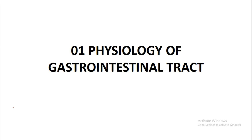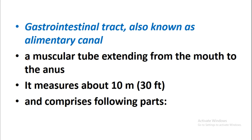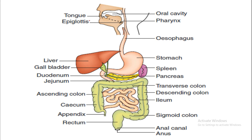Today we begin with the physiology of the gastrointestinal tract, also known as the alimentary canal. It is a muscular tube extending from the mouth to the anus, measuring about 10 meters or 30 feet in length. It comprises the following parts: oral cavity, pharynx, esophagus, stomach, duodenum, jejunum, ileum, cecum, ascending colon, transverse colon, descending colon, sigmoid colon, rectum, anal canal, and the anus.